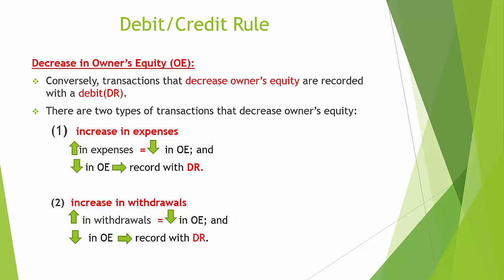Conversely, transactions that decrease owner's equity are recorded with a debit. There are two types of transactions that decrease owner's equity: an increase in expenses reduces owner's equity, and a decrease in owner's equity is recorded with a debit. Likewise, an increase in withdrawals decreases owner's equity, and a decrease in owner's equity is recorded with a debit.